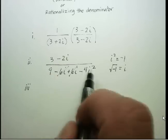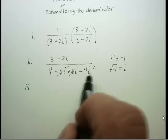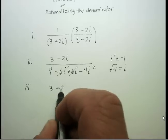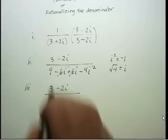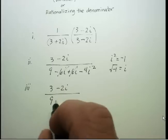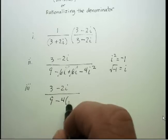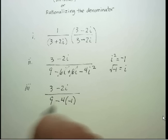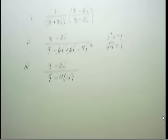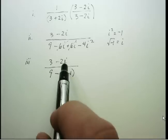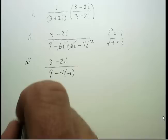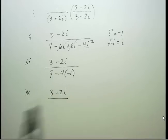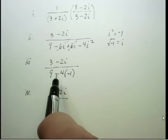With those two identities you can switch between real and imaginary numbers. In the next step, let's rewrite i² as negative 1. So the numerator stays 3 minus 2i. Down in the denominator, I have 9 minus 4 times negative 1, because I just substituted i² with negative 1. I've accomplished part of my objective — I've gotten the i out of the denominator.